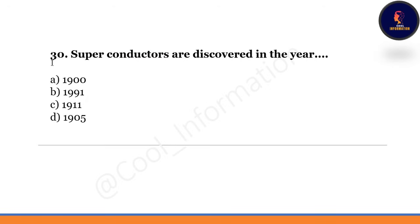Superconductors were discovered in the year — correct option is C — 1911. Superconductors were discovered in the year 1911.